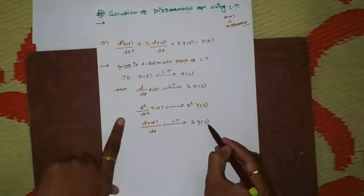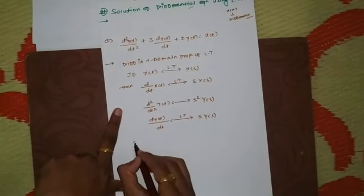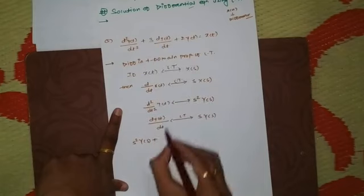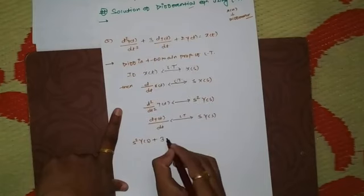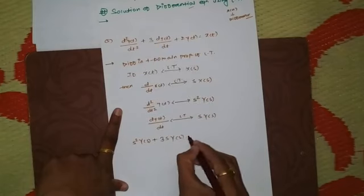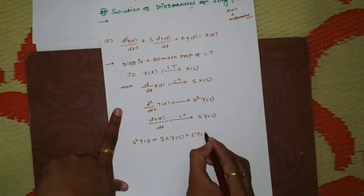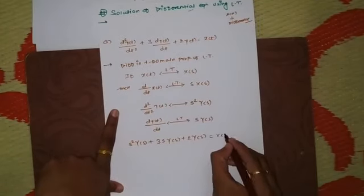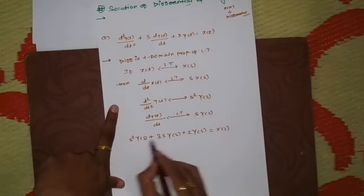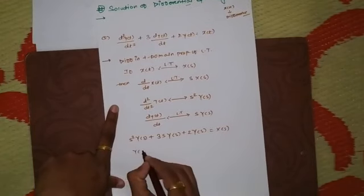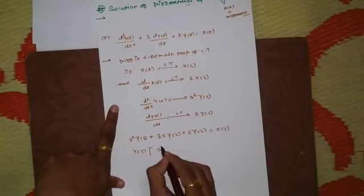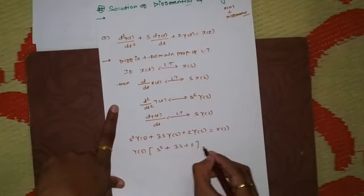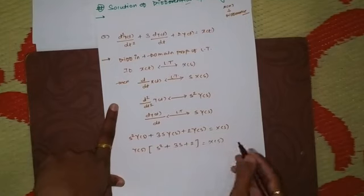So the transformed equation becomes: s²·Y(s) + 3s·Y(s) + 2·Y(s) = X(s). Collecting Y(s), we get Y(s)·(s² + 3s + 2) = X(s).